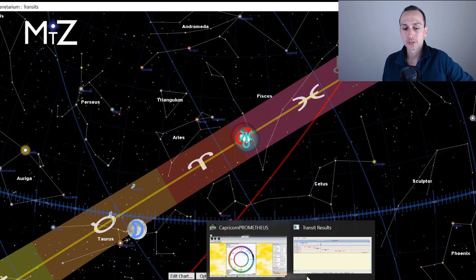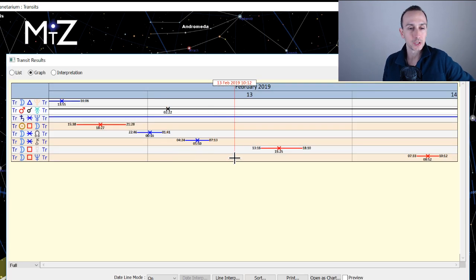Alright, so that conjunction still in orb, the most important thing going on astrologically today. Alright, other than that, on a very minor note, the moon is going to be squaring up to Mercury.